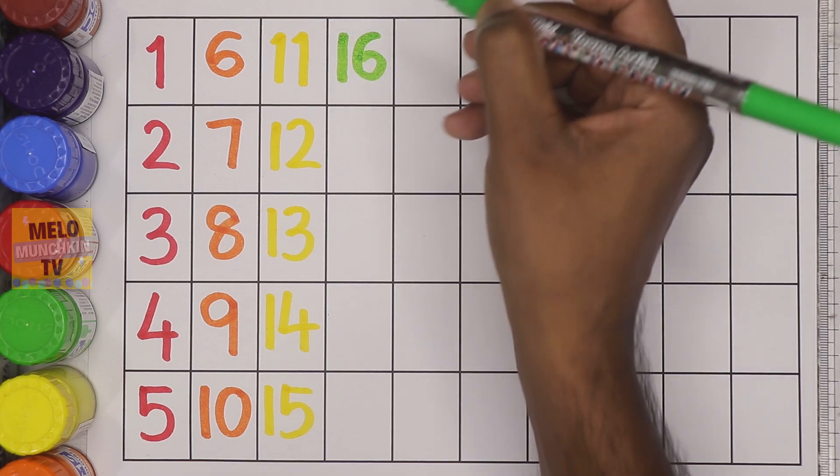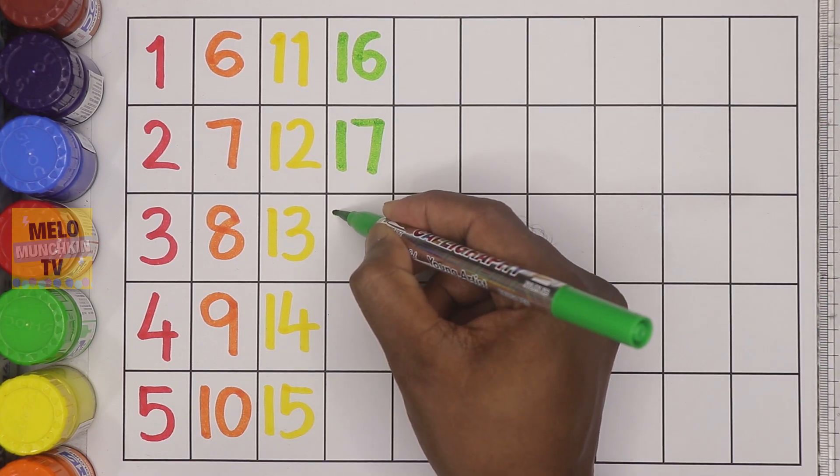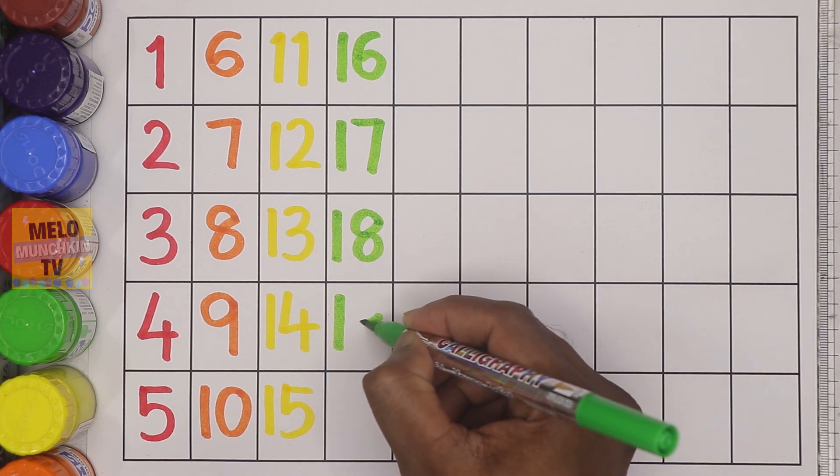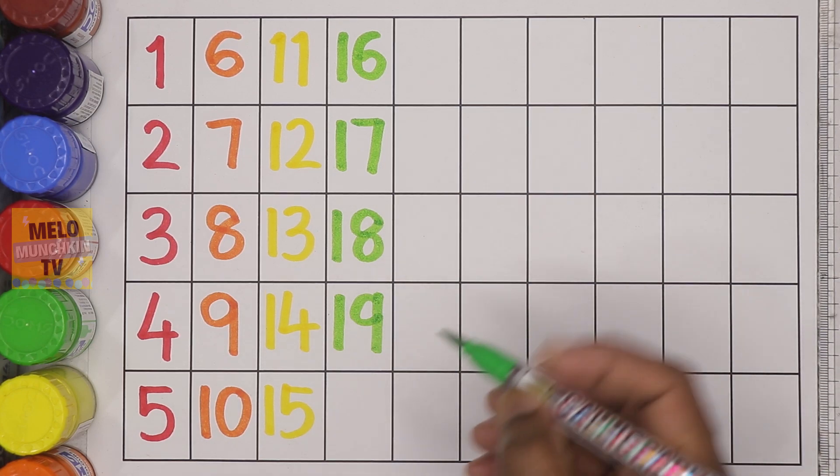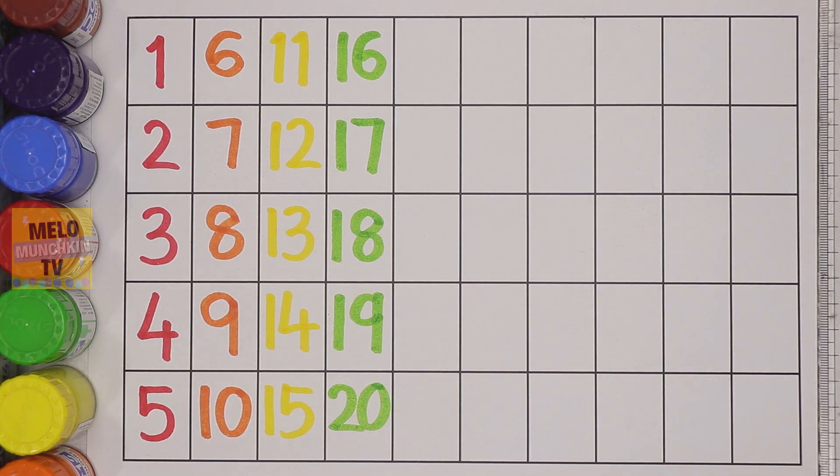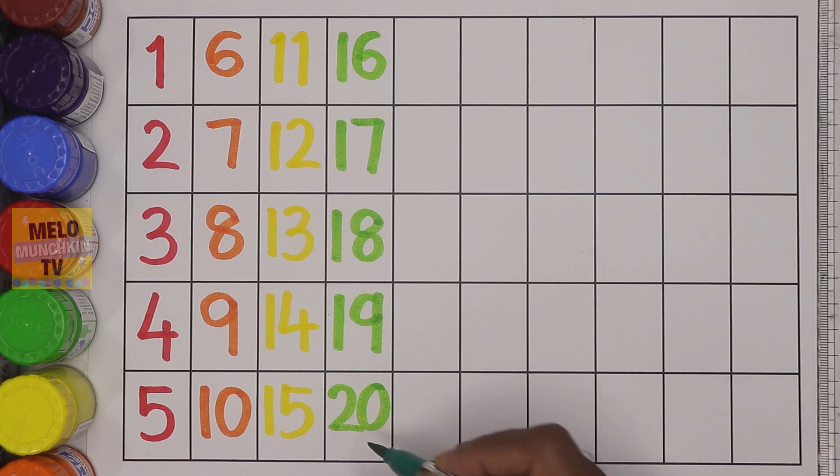sixteen, seventeen, eighteen, nineteen, twenty. Next I'll take dark green color and write after twenty